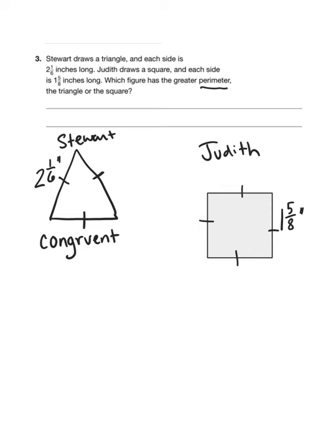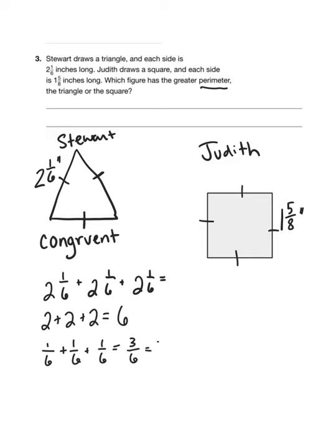Okay, so for this you can do two and one-sixth plus two and one-sixth plus two and one-sixth. Now, I love this because we don't have to worry about common denominators, so this does make it easier. Let's add our whole numbers first. Two plus two plus two of course gives us six. And then one-sixth plus one-sixth plus one-sixth gives us three-sixths, or one-half in simplest form. So the perimeter of the triangle is going to be six and a half inches.